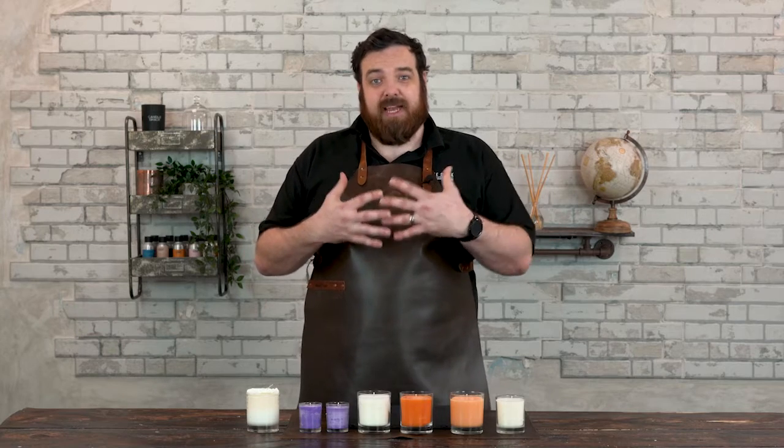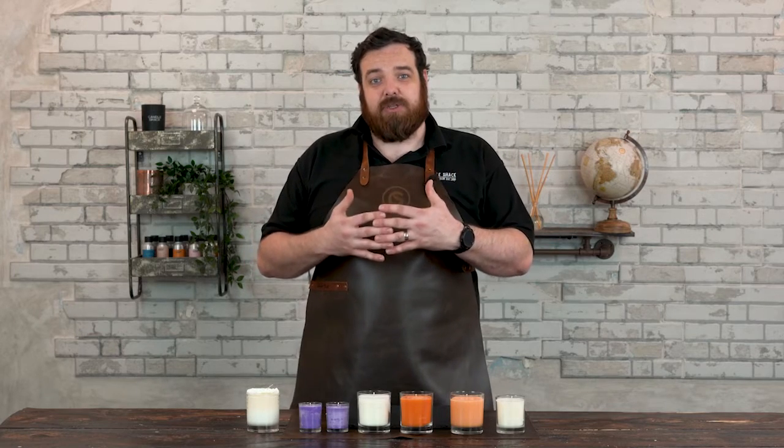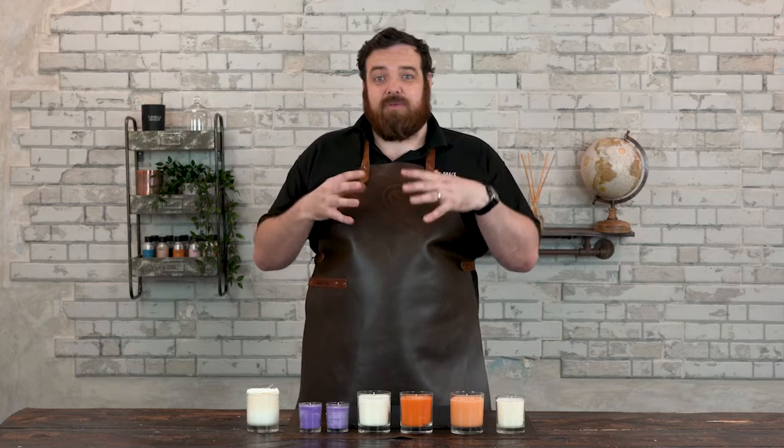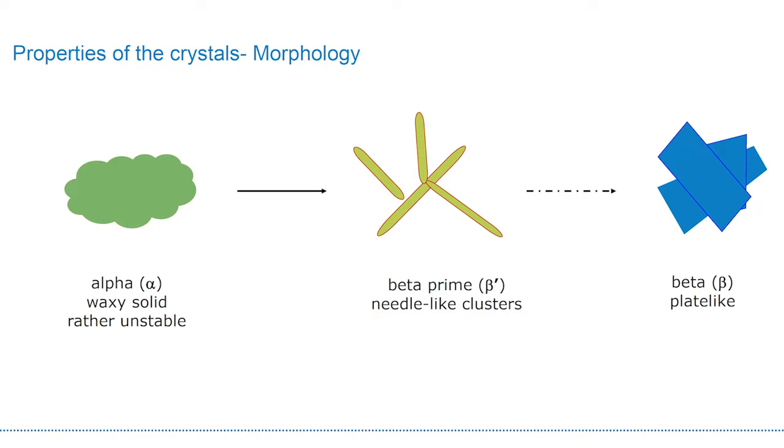Polymorphism is only really found in plant waxes. When a plant wax cools it forms crystals, which then form together into a crystal structure that essentially houses the fragrance within it. The crystals will form in three main types: alpha, beta, and beta prime.